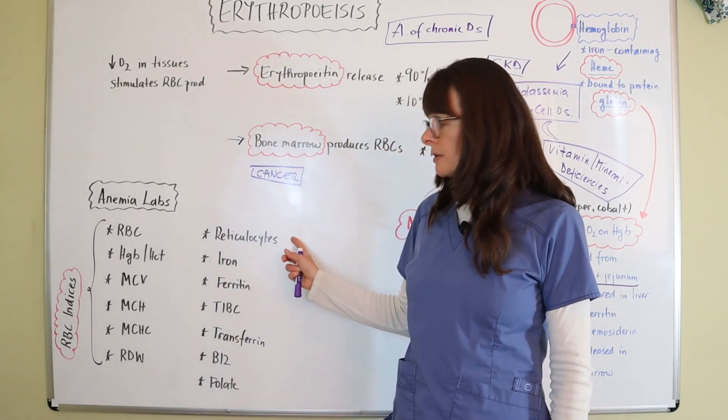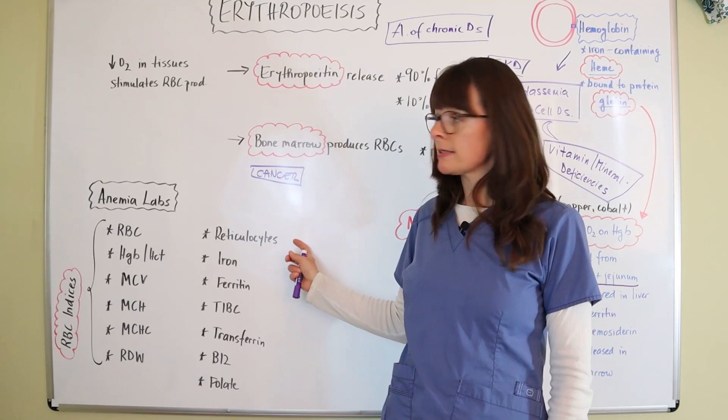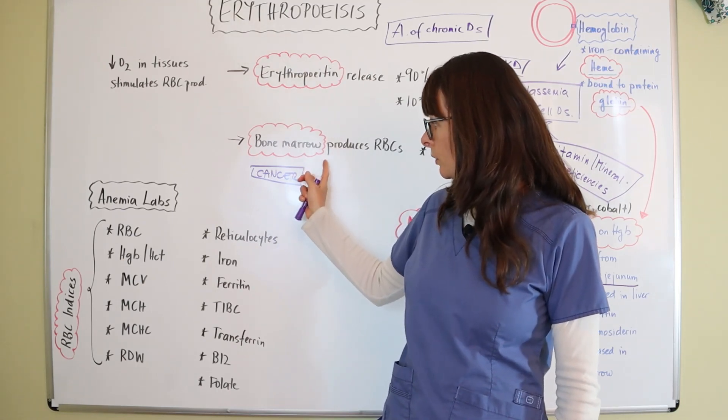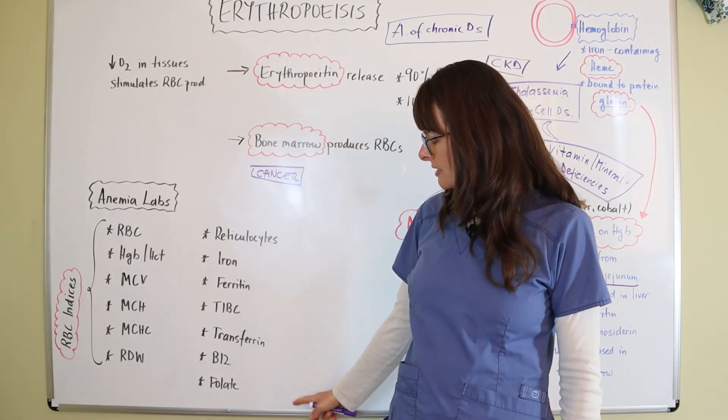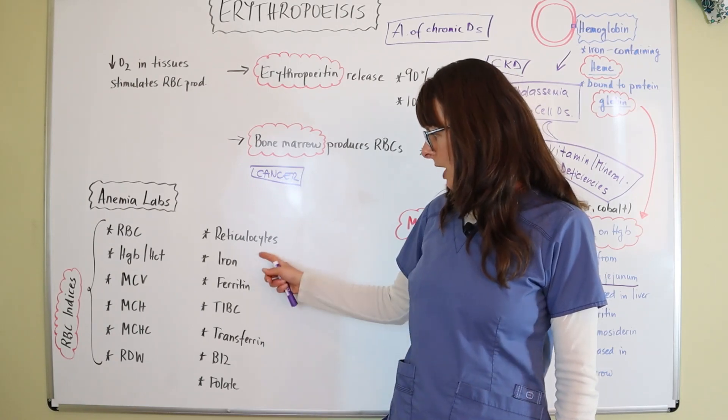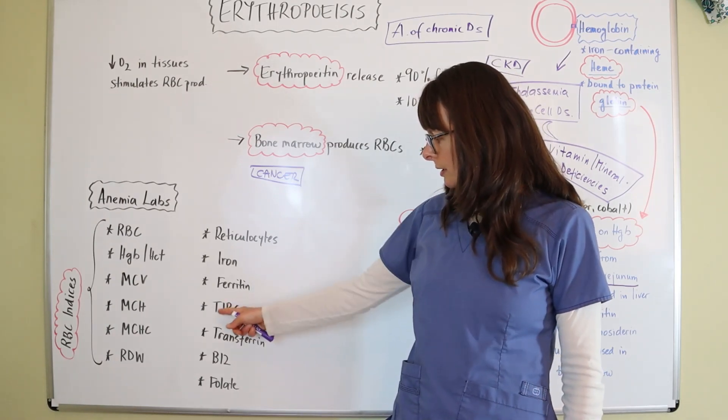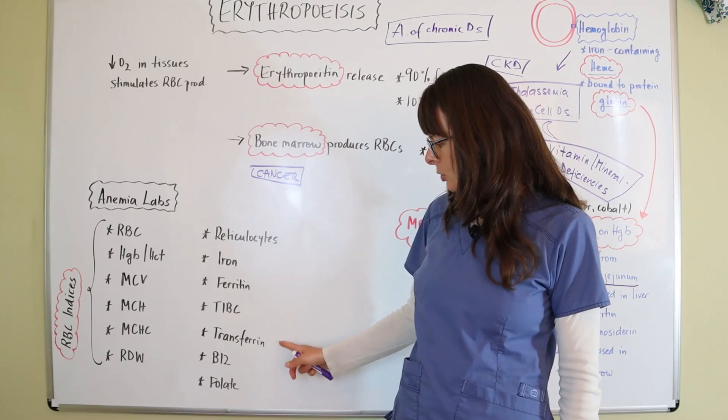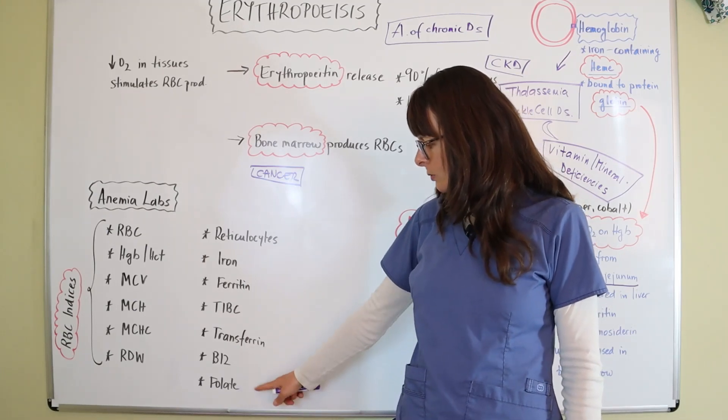We can also look at reticulocytes, which are immature red blood cells. So that usually means that there's something going on with the bone marrow. And then we can look at all these vitamins and minerals themselves: iron, ferritin, the total iron binding capacity, transferrin, B12, as well as folate.